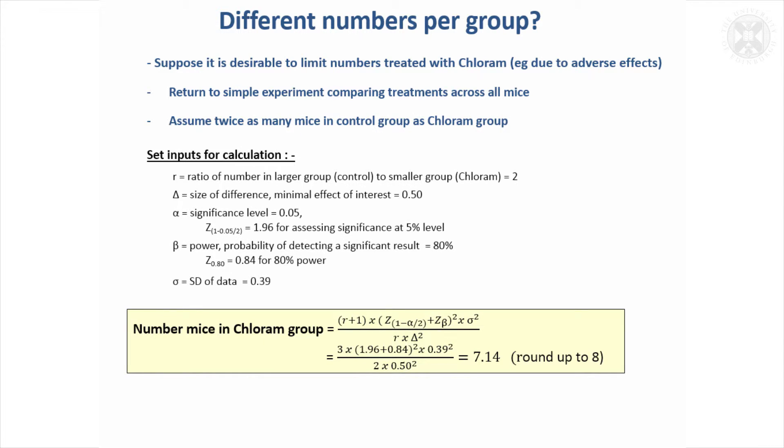I won't go into justifying how this was done, but you can set the ratio of the number in the larger group, which is for us controls, to the smaller group. We'll set that ratio to be 2 here, and the formula just builds in this R value, the ratio value. So we've just got R plus 1 on the top and R on the bottom. And so if we put that into a value of R equals 2 into the calculation that we had originally,